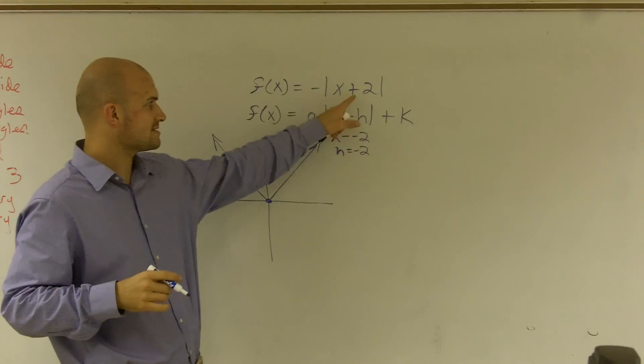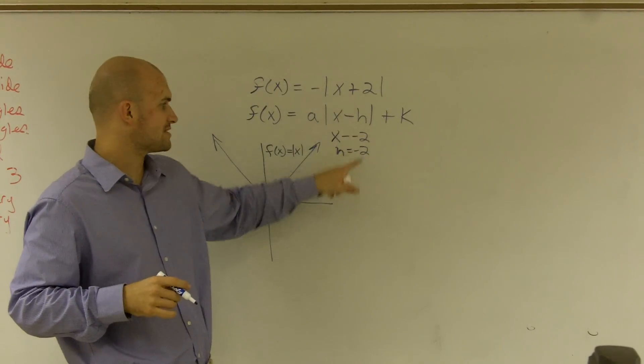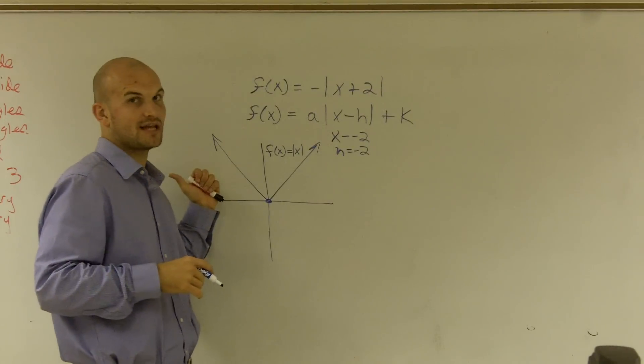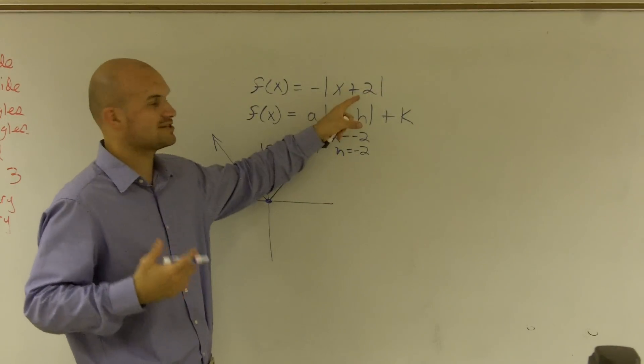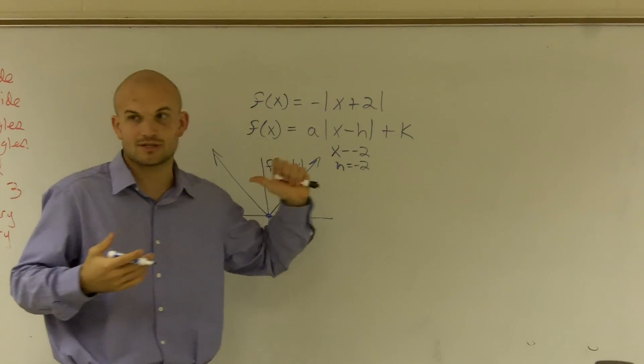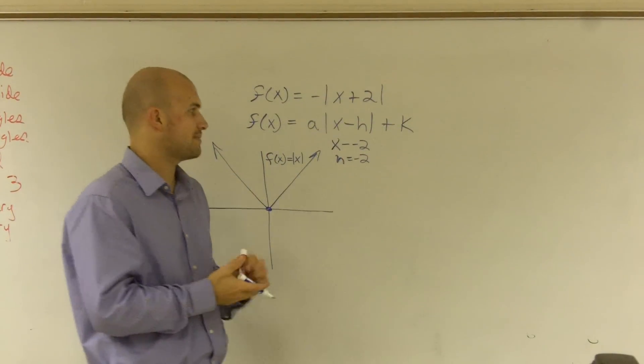So in this case, if it's x + 2, that really means my h is negative 2, meaning I'm going to shift it to the left 2. Sometimes we just say ignore that and just do the opposite. So if it says plus 2, that tells you to shift it to the left 2. It's sometimes a lot easier to remember that.